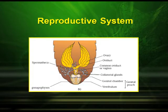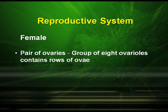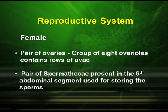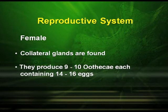Regarding the female reproductive system, the female has a pair of ovaries which is actually a group of eight ovarioles containing rows of ova. It has a pair of spermatheca present in the sixth abdominal segment, used for storing sperms. The collateral glands in the female produce about nine to ten ootheca, each containing about fourteen to sixteen eggs.